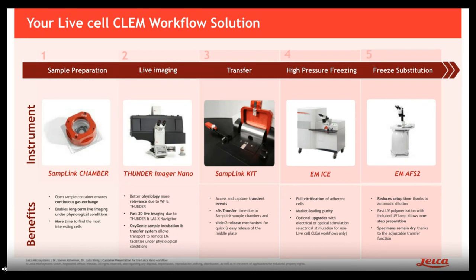After live cell imaging, we transfer the whole thing with a sampling kit to the high-pressure freezer to enable a fast transfer to capture the event of interest. We are able to achieve a transfer in less than five seconds from imaging until the moment of high-pressure freezing. The transfer is very easy to perform in a three-step semi-automated movement. To get the best possible fixation, we use high-pressure freezing with our already established high-pressure freezer, the EMIS, and all the benefits that come with this system.